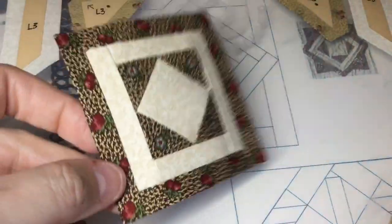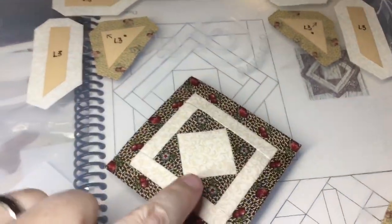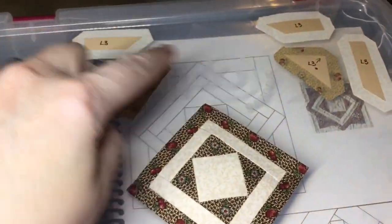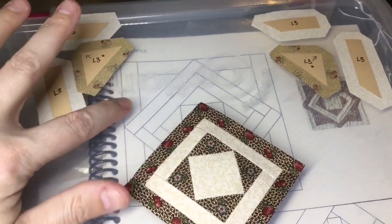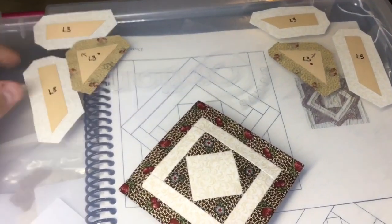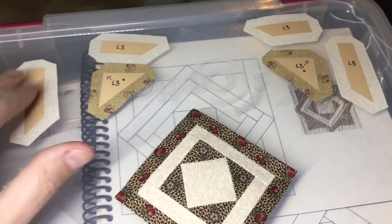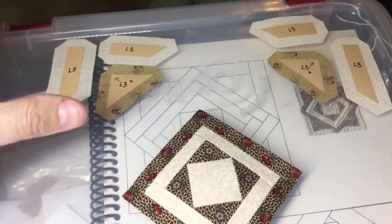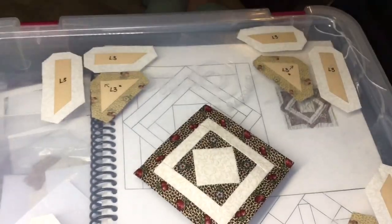I got the second border around the center portion of my square, so this section is all completed. Now I'm just going to assemble the corner units which consist of a long piece with an angle on it, a shorter piece, and then a triangle. I will put the shorter piece on the triangle first and then I will put the longer pieces on the connected unit. I will do that for all four pieces.